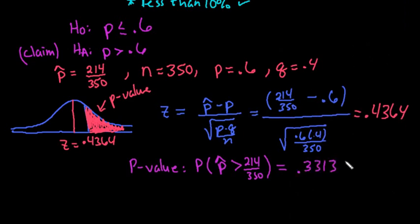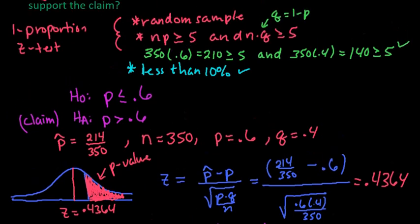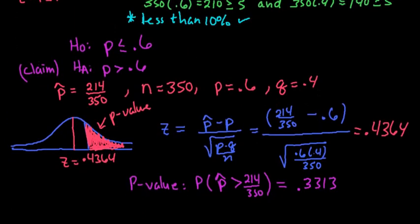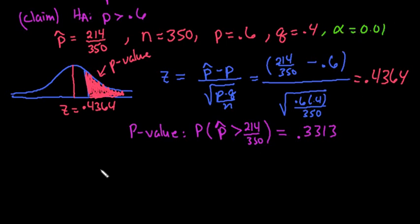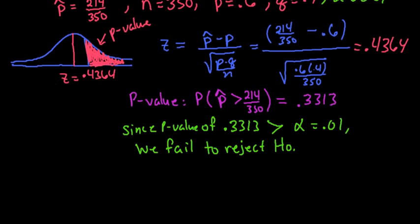The 0.33 means that 33% of the time we could get this sample from this population, which is very likely to happen. So again, I forgot to write down alpha, so let's go back up to our problem. Alpha is 0.01. So we would compare our P value to our alpha level. If P is less than alpha, we reject. If it's not, we fail to reject. So since the P value of 0.3313 is much greater than alpha 0.01, we fail to reject, and that's our decision that we would make.